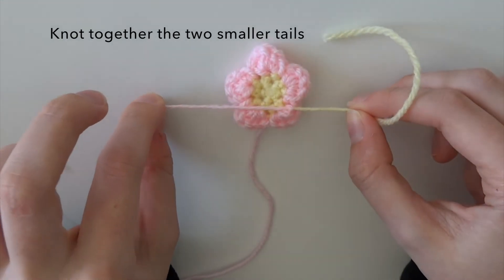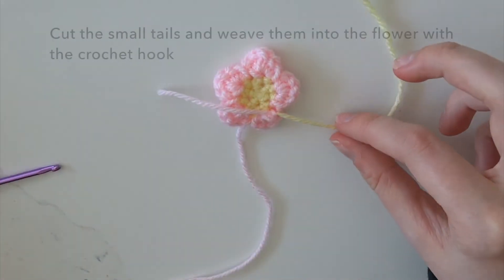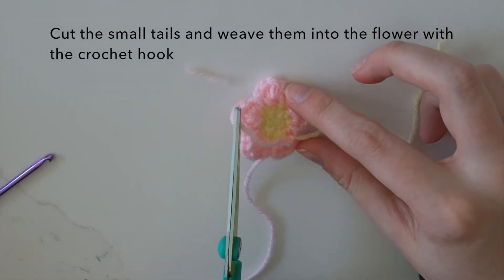Then the two smaller tails that you're left with, you want to tie them together and then just tuck them away using a crochet hook.